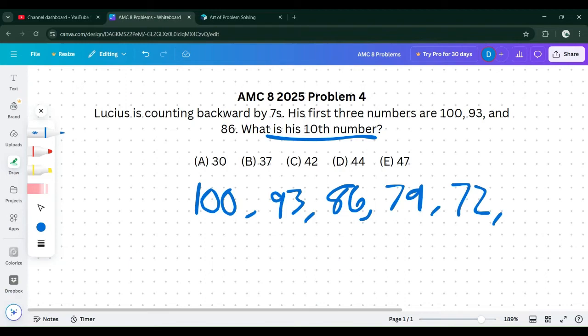We're just going to count backwards by 7s. Obviously your calculations have to be quick because you only have 40 minutes to solve all these problems. You will get 37 for your 10th number. There is a risk factor for doing this. If you're doing it really quickly, you might count wrong. But there is an answer choice for 37, so the answer choice is B.